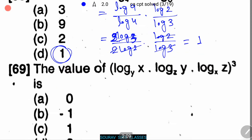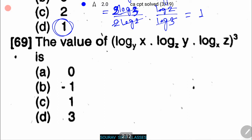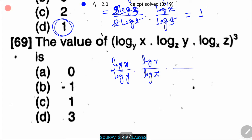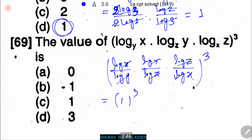Next problem: find the value of log_y(x) · log_z(y) · log_x(z), whole to the power of 3. The solution: this equals (log x / log y) · (log y / log z) · (log z / log x), all to the power 3, which simplifies to 1³ = 1. So the right answer is option C.